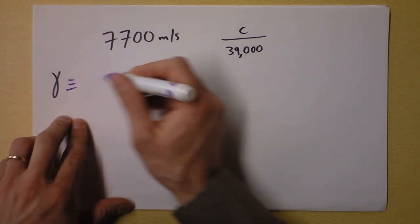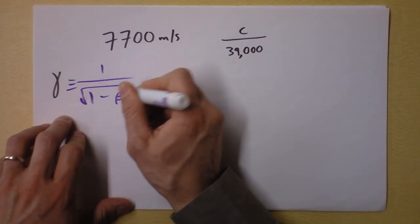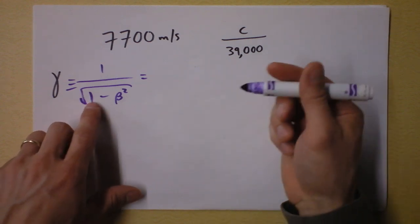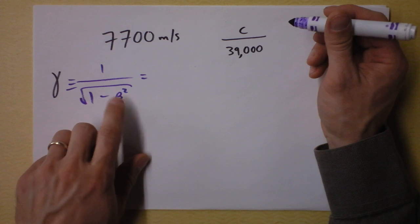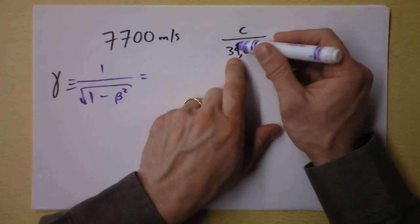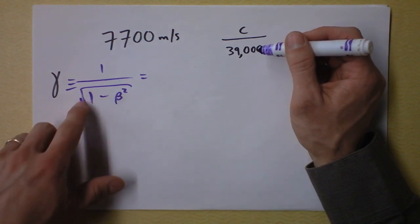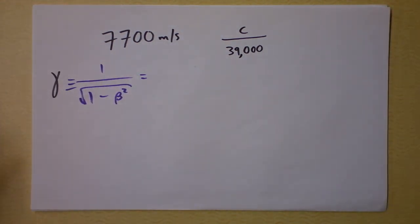You remember that the definition of gamma is 1 over the square root of 1 minus beta squared, and so if I plug this in, I'm going to find that gamma is equal to 1, but the problem is my calculator just can't handle squaring 1 over 39,000 squared, and then subtracting 1 from it and taking the square root of that and then the inverse. Can't handle it.